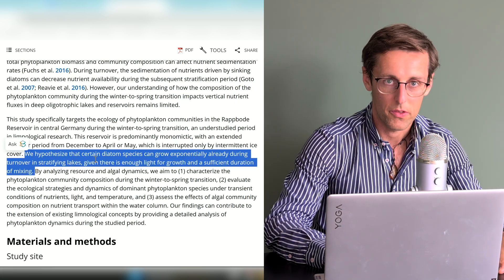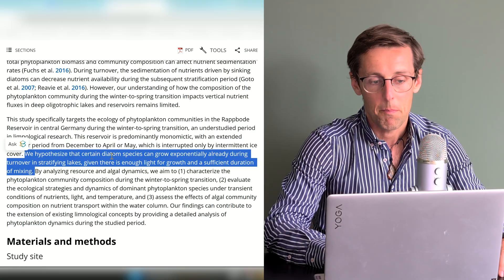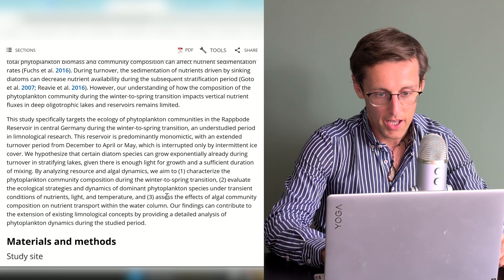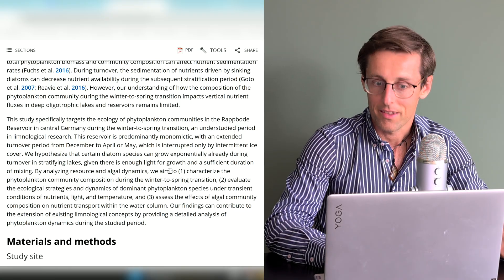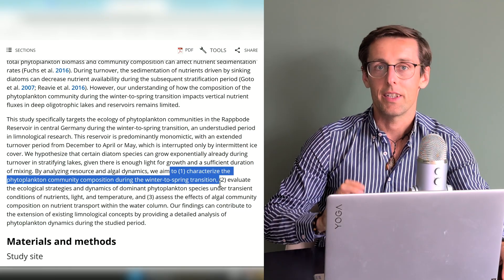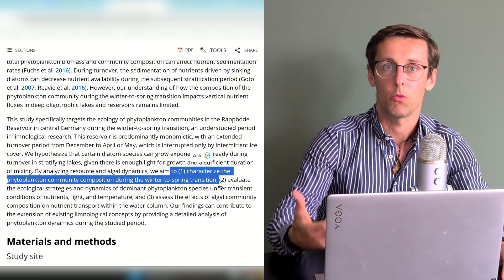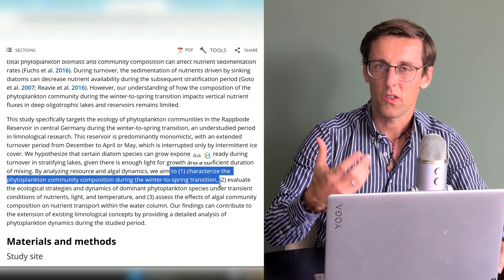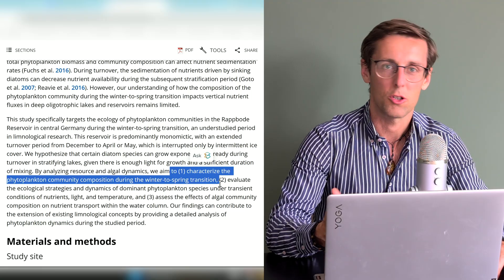And then we've got a hypothesis as well and a much more specific aim. So rather than just a general aim, what the writer does here is to already indicate what the potential outcomes or contributions of this research might be in order to show us what's the point of this whole research anyway.